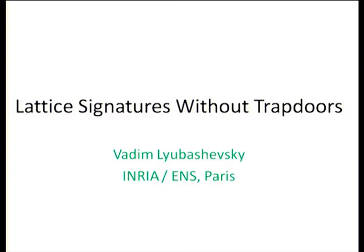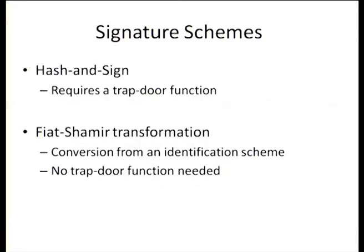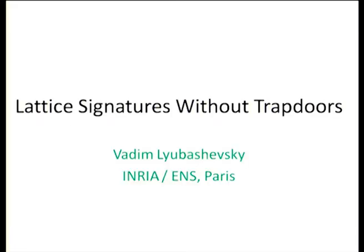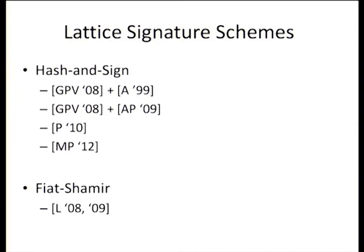My talk is about constructing lattice-based signatures without trapdoors. You can construct trapdoors, but you can do things without them as well. Signature schemes are probably one of the most important public key primitives, and if we want to get lattice-based crypto to be used at some point, we should really get these right.